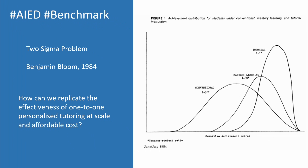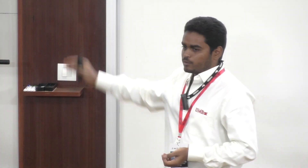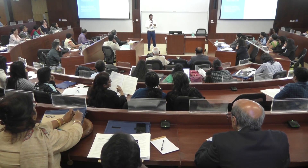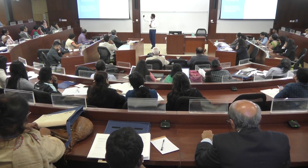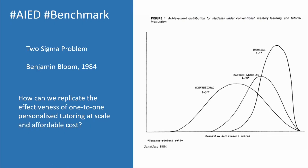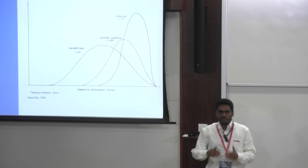They had three groups. The first, a conventional group, received instructions in a regular lecture format — one teacher teaching 30 students. The second, a mastery learning group of 30 students, was taken through learning outcomes step-wise. If they didn't get step one correct, they had to come back to step one; they could not move to the next step until they mastered the current one. The third group was tutorial — one-on-one personalized learning, where each student was assigned an individual tutor to guide them through each step.